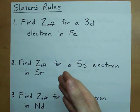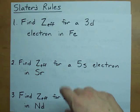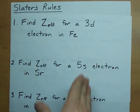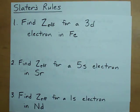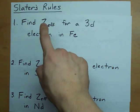These are three kinds of questions you could see: Find the effective nuclear charge for a 3d electron in iron, or a 5s electron in strontium, or a 1s electron in neodymium. If you're given the electron you need the effective nuclear charge for and the atom, you're going to be able to figure out what that effective nuclear charge is.